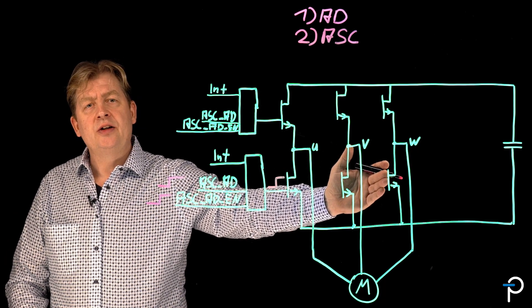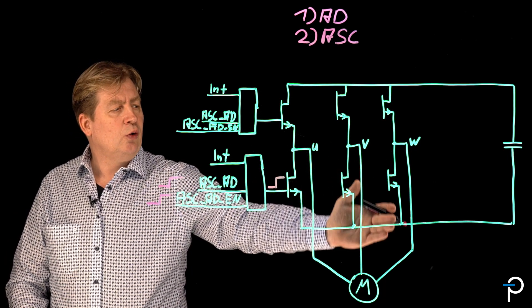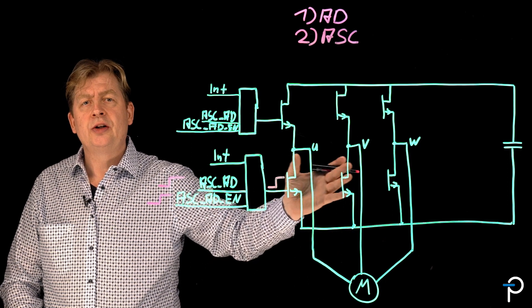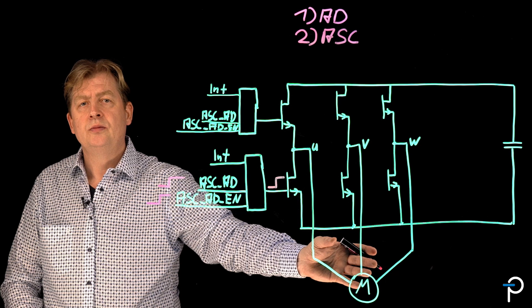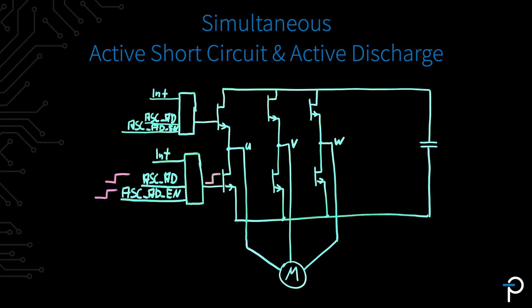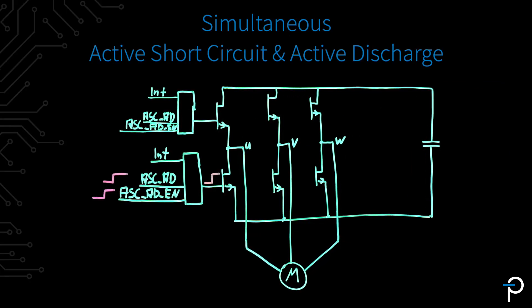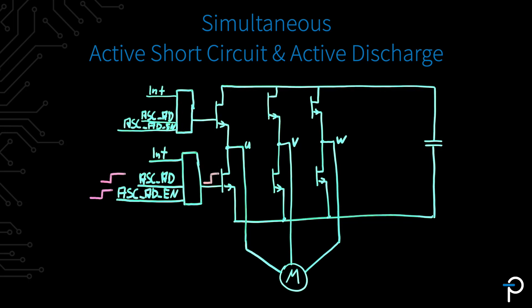In the moment where I do this with all three bottom Scale EV gate drivers, I am bringing the whole system into the active short circuit to take out the energy of a rotating motor. In some situations an active short circuit and active discharge need to be at the same time.